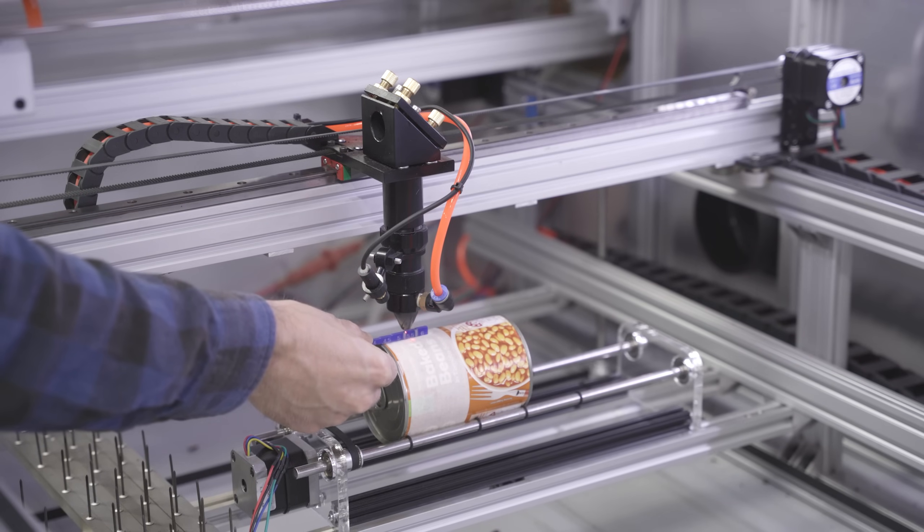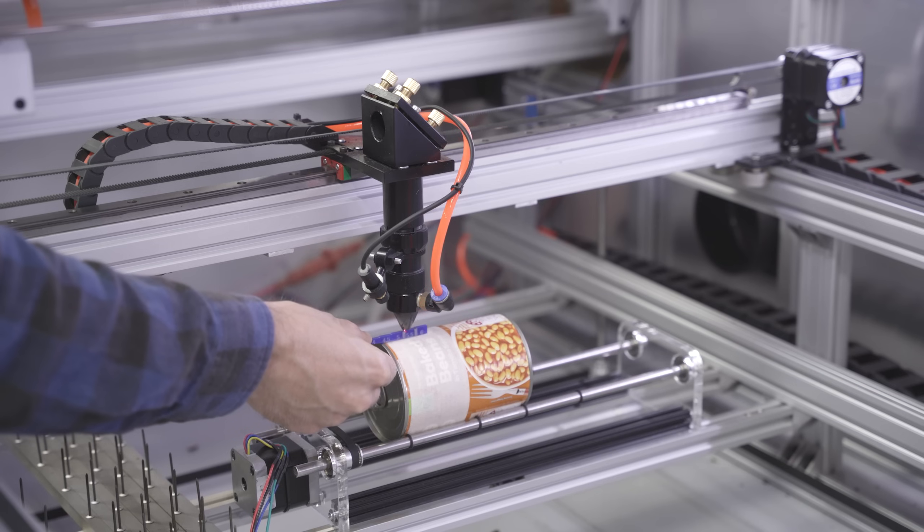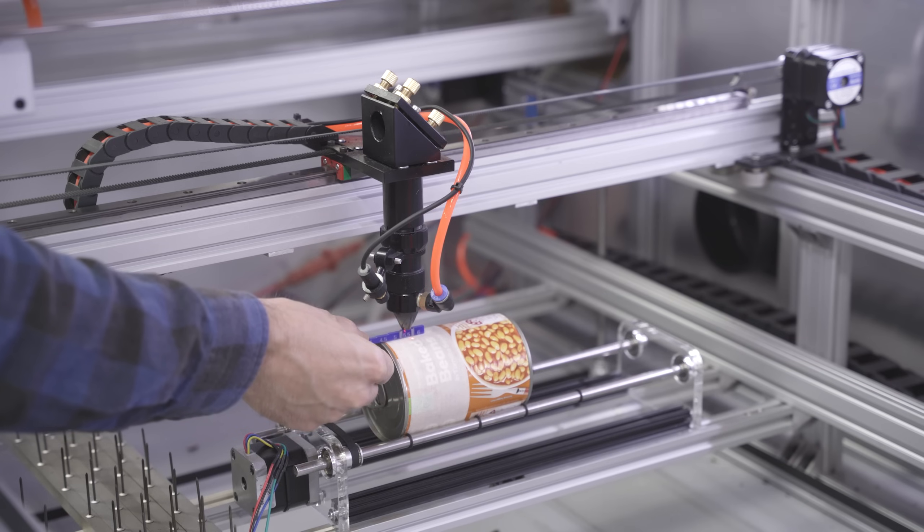Setting up the rotary axis begins by lining up the gantry over the top center of the can and setting the height as this will be where the laser engraves.